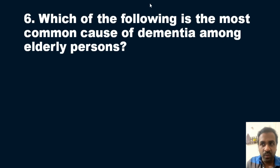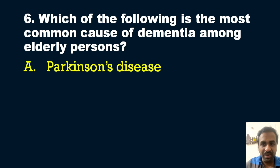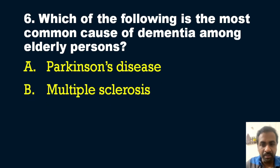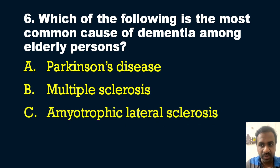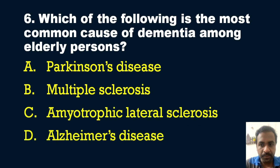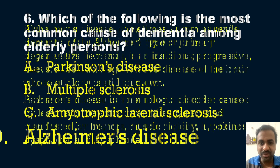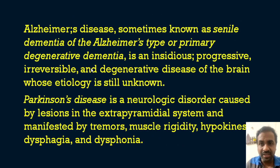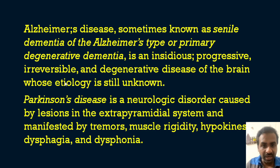Question six: Which of the following is the most common cause of dementia among elderly persons? Options: A) Parkinson's disease, B) Multiple sclerosis, C) Amyotrophic lateral sclerosis, D) Alzheimer's disease. The answer is option D — Alzheimer's disease, sometimes known as senile dementia of the Alzheimer's type or primary degenerative dementia. It is an insidious, progressive, irreversible, and degenerative disease of the brain whose etiology is still unknown.